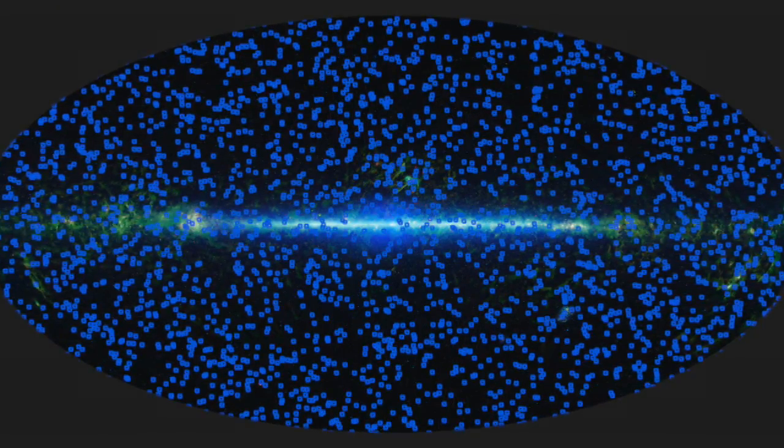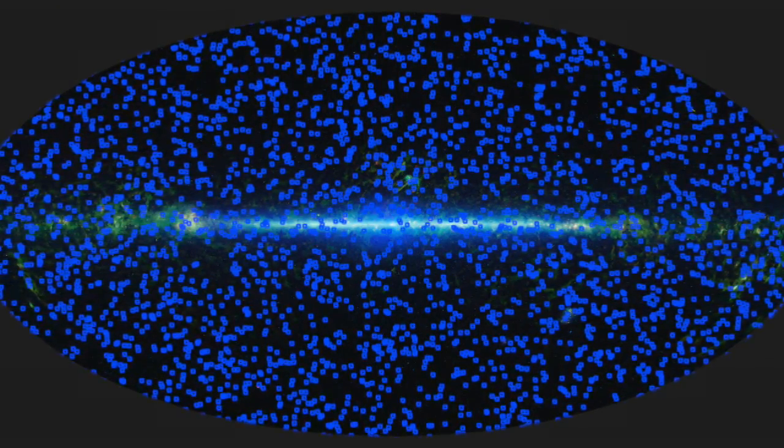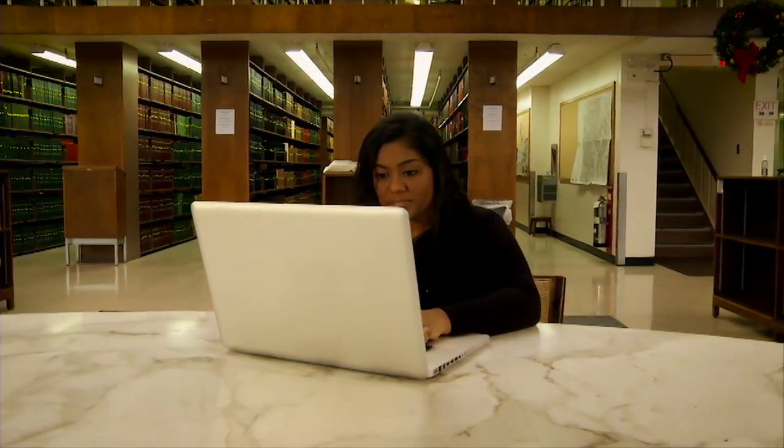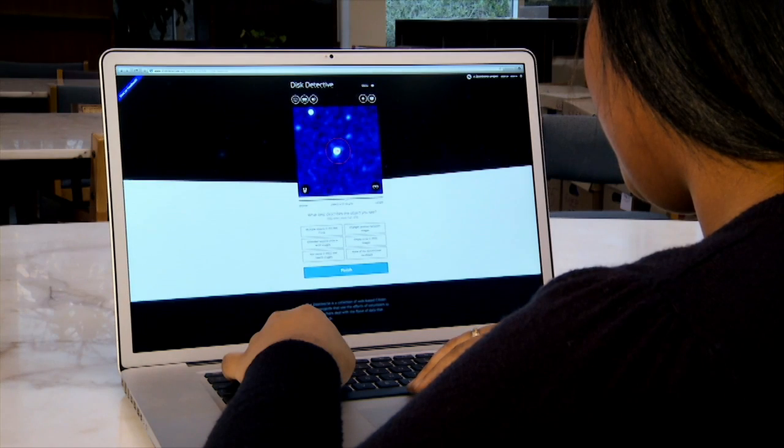Single WFIRST images will contain over a million galaxies, and we can't categorize and catalog those galaxies ourselves. Citizen Science allows interested people in the general public to solve scientific problems. And so one of the things that I'm really excited about is enabling this bridge where the general public can get involved in doing actual science.